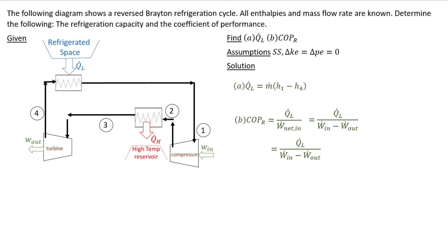And of course the W.in is between, it's your compressor, it's between 1 and 2. And your W.out is between 3 and 4, that's your turbine.